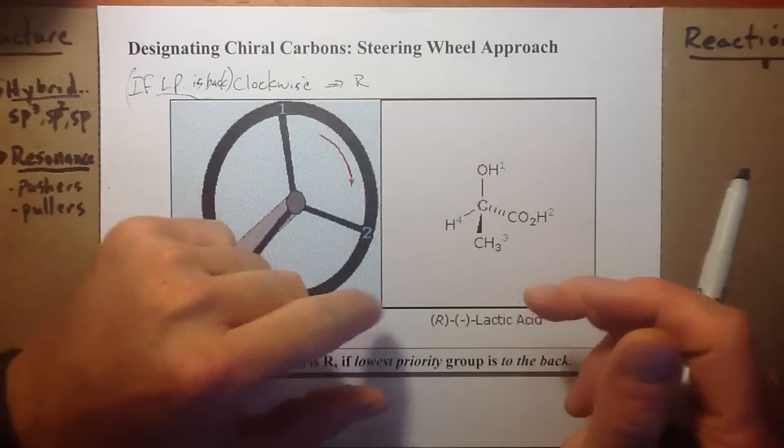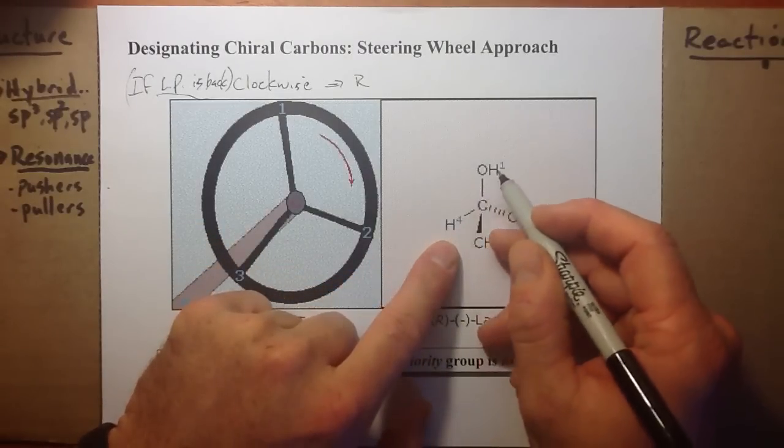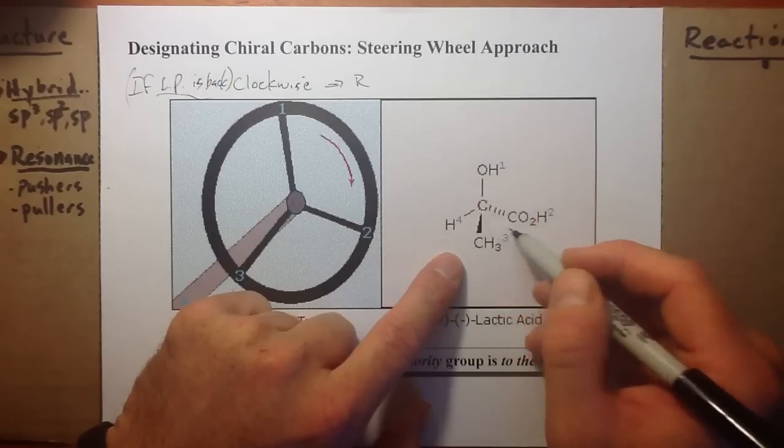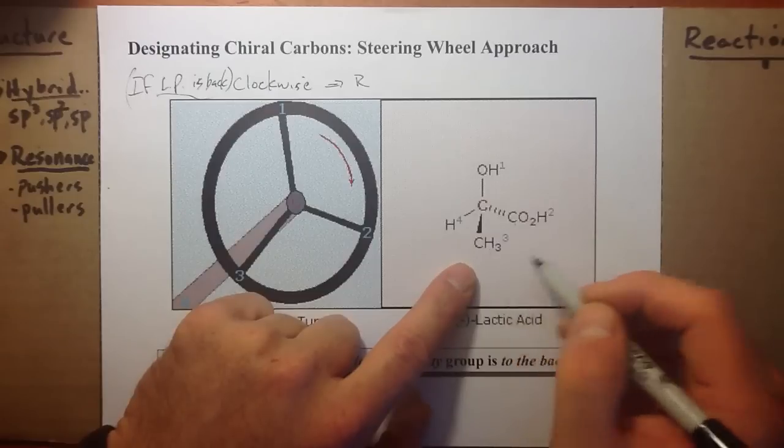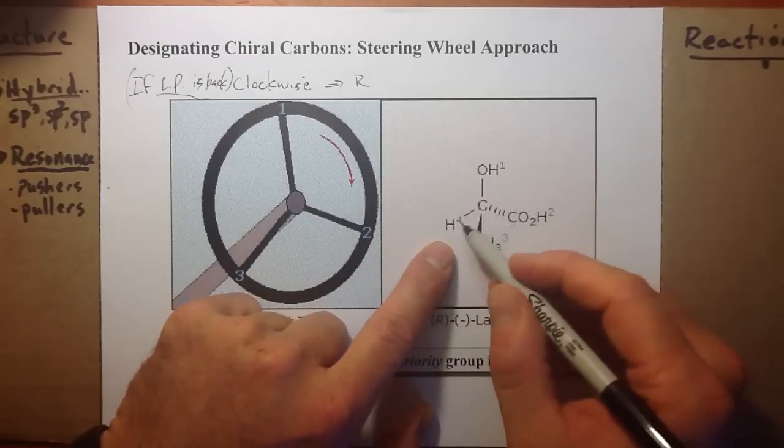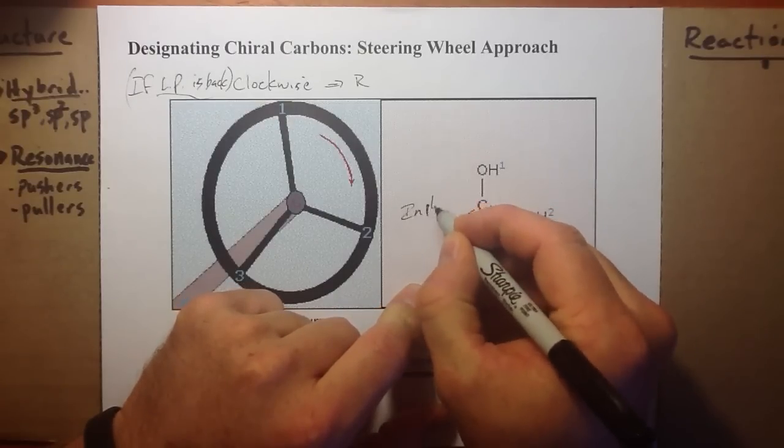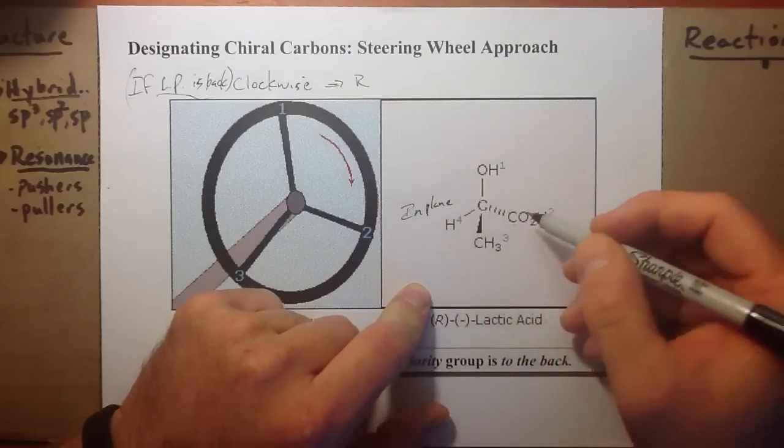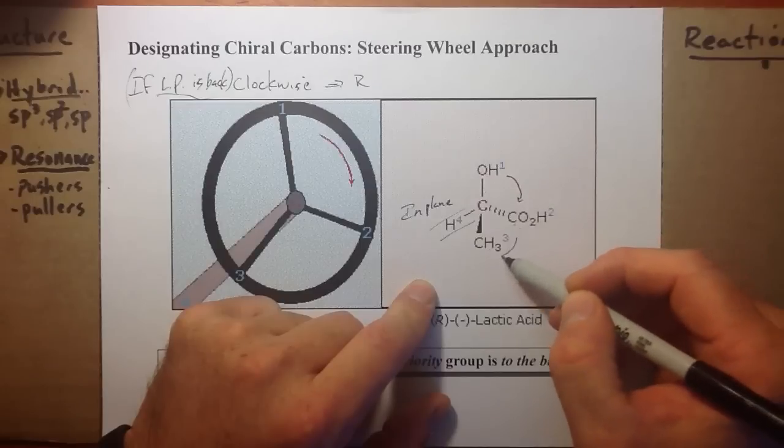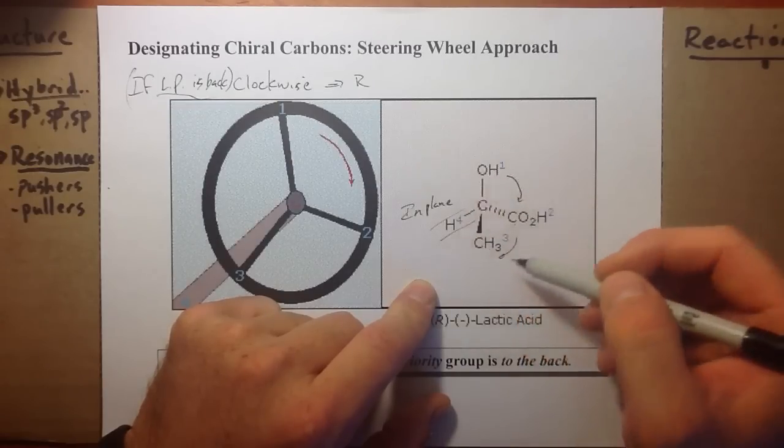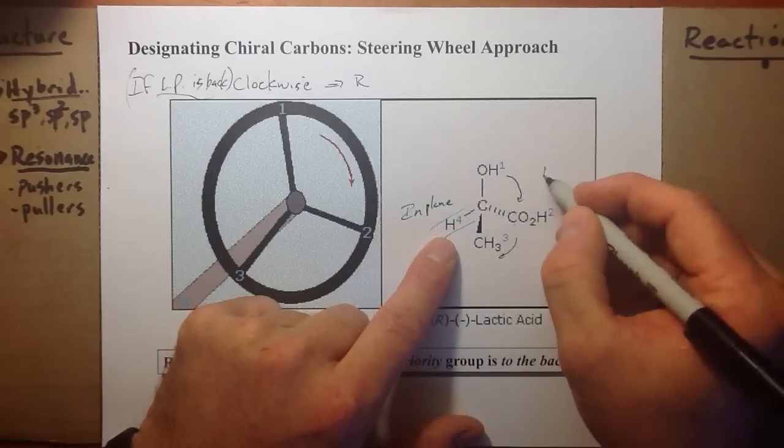Let's look at lactic acid, R minus lactic acid. I've already set the priorities. O is the first thing we see that's biggest. These two are the same, but once you dinghy out, it has two oxygens, this only has three hydrogens. So it's two, this is three, and this is four. Now, lowest priority is in the plane. How do we deal with that? You can still imagine your steering column. You can see this is going from top to right, so we're making a clockwise turn. We could say LP to the back, clockwise, this would be R.